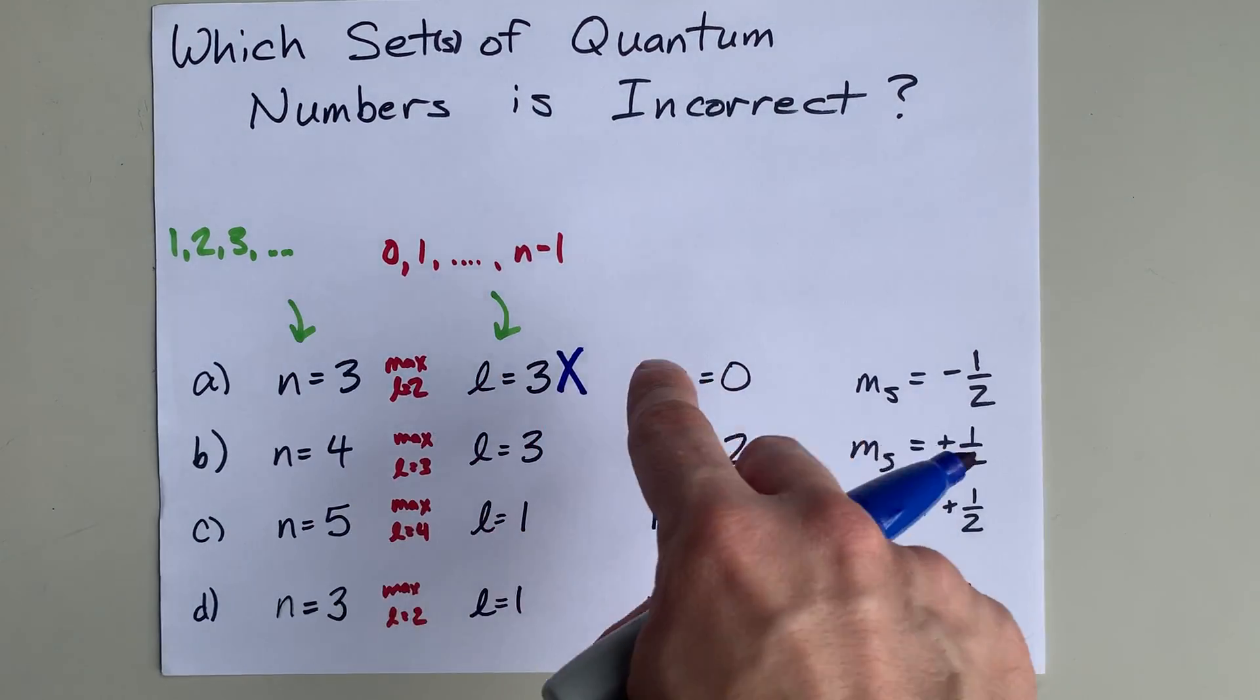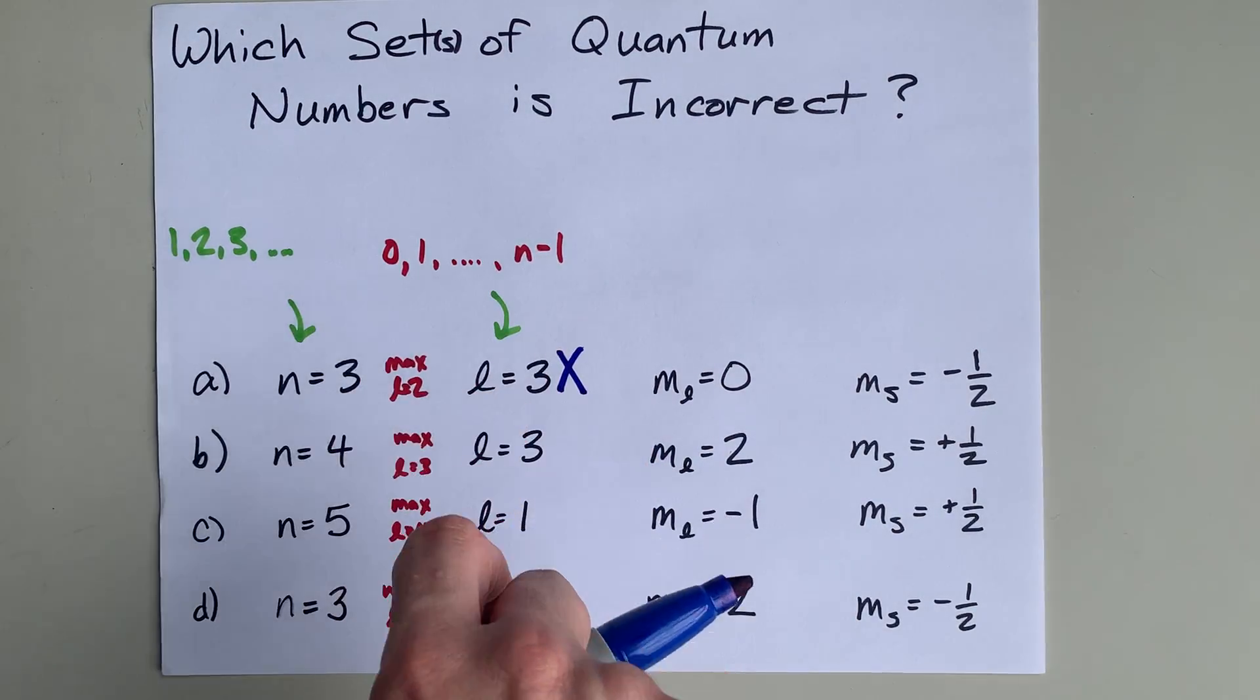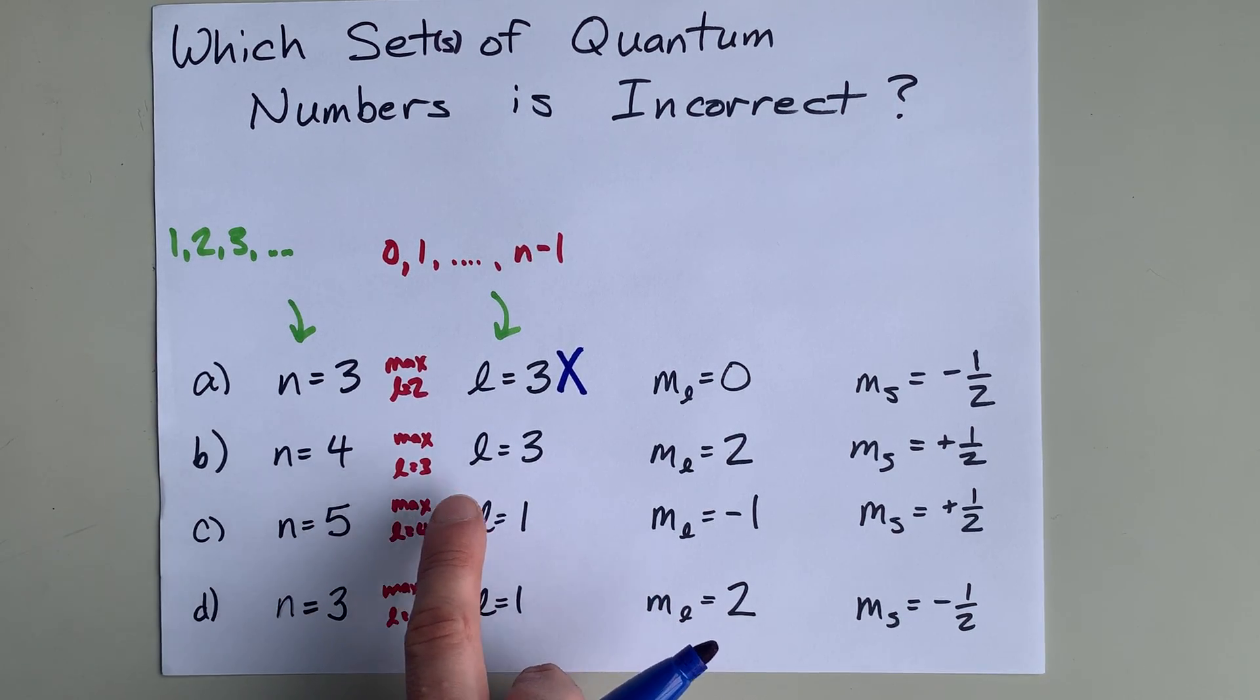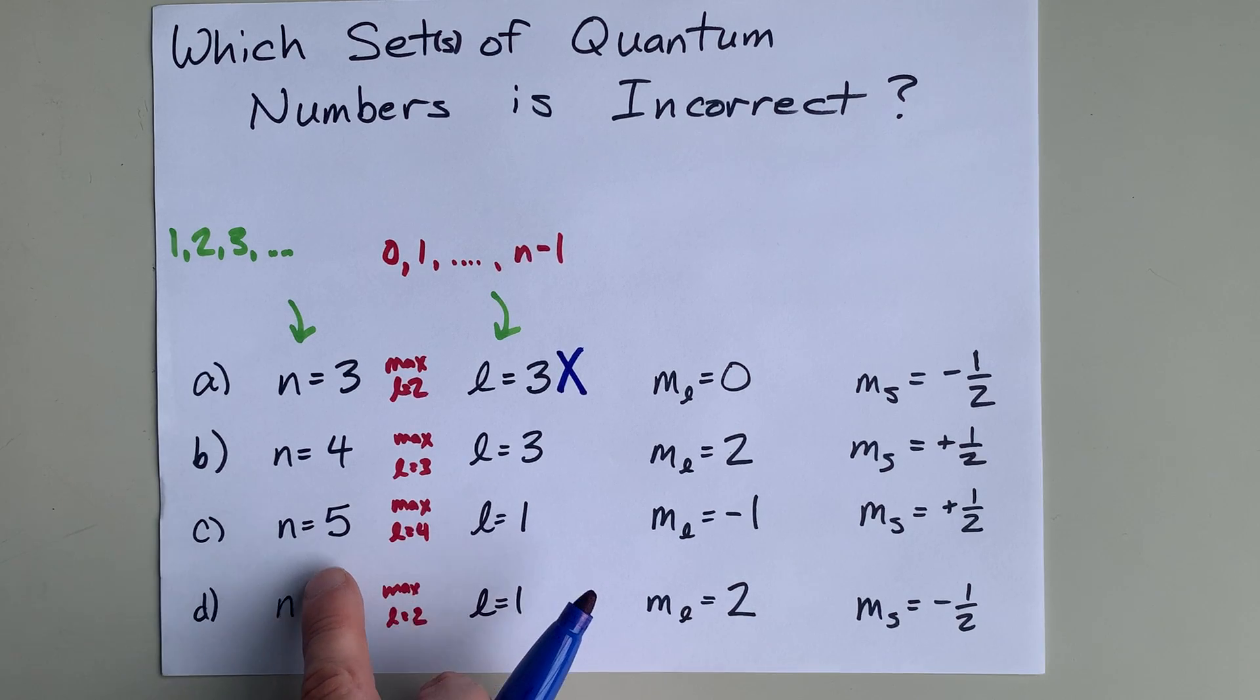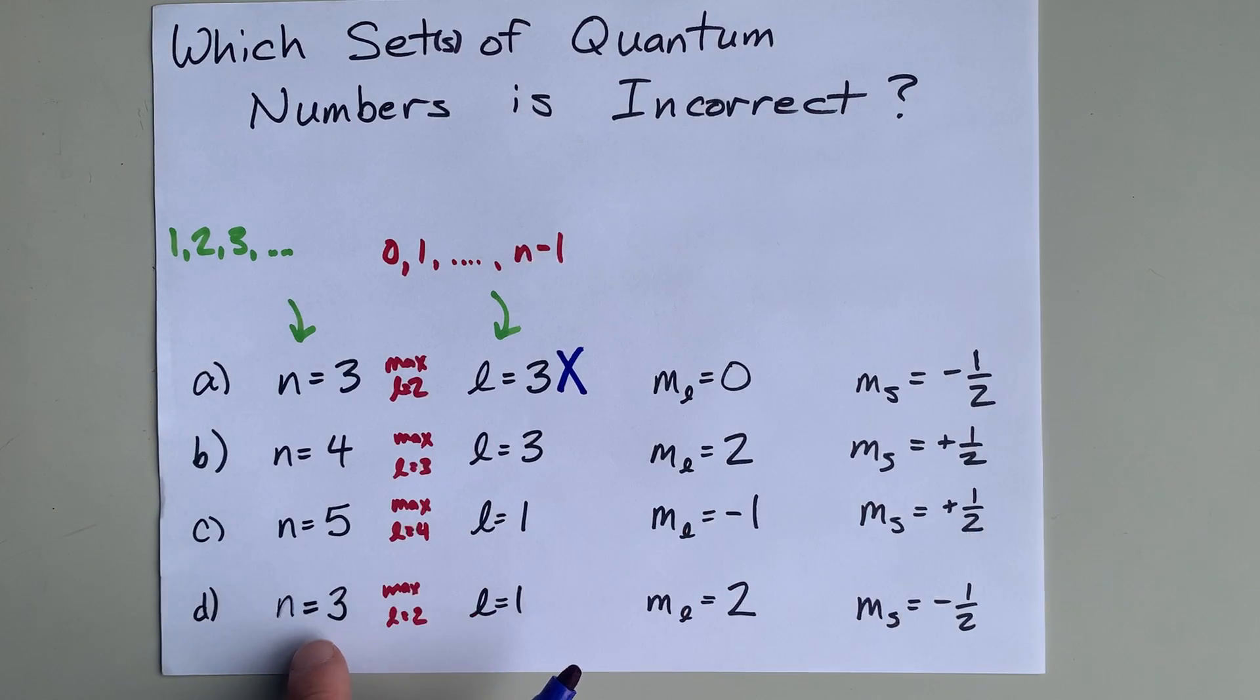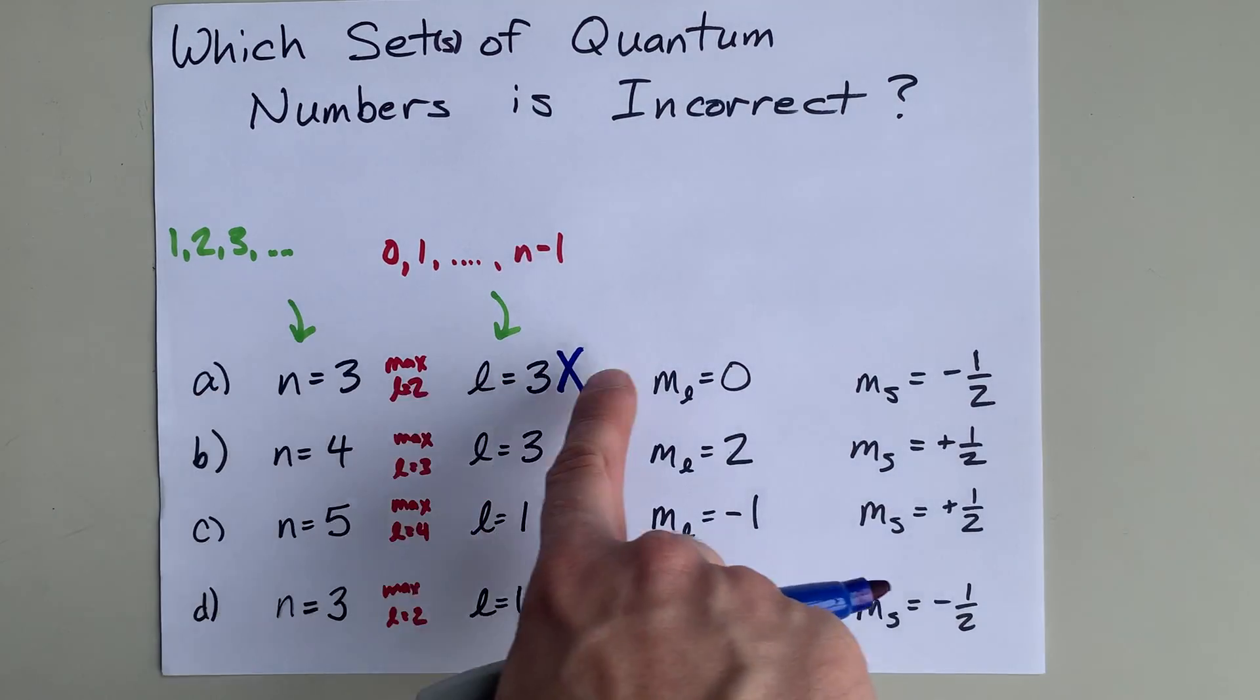L also isn't allowed to be more than N. There's a maximum, and it's N minus 1. When N is 4, the highest L allowed is 3. When N is 5, the highest L allowed is 4, and 1 is less than 4. And when N is 3, the maximum L is 2, and 1 is less than 2. So A is incorrect.